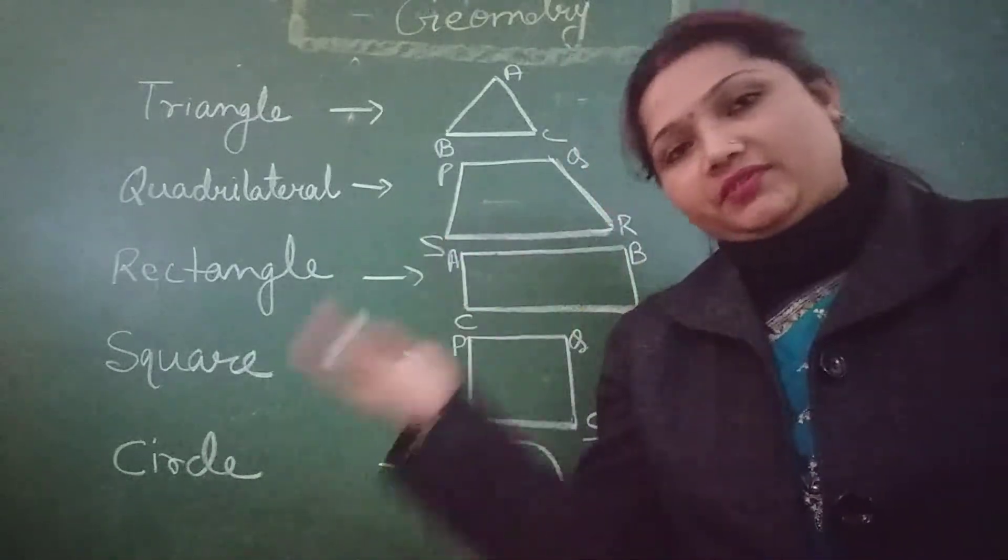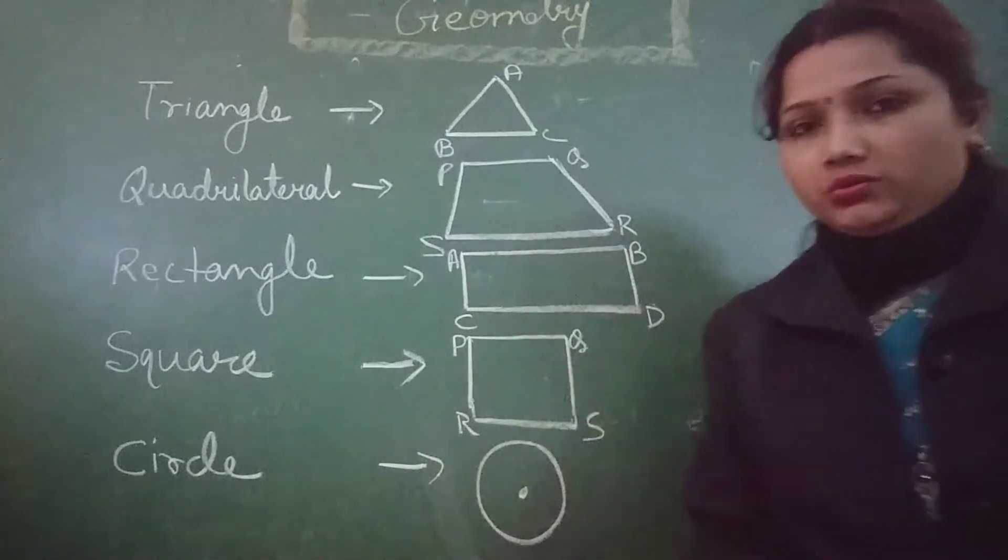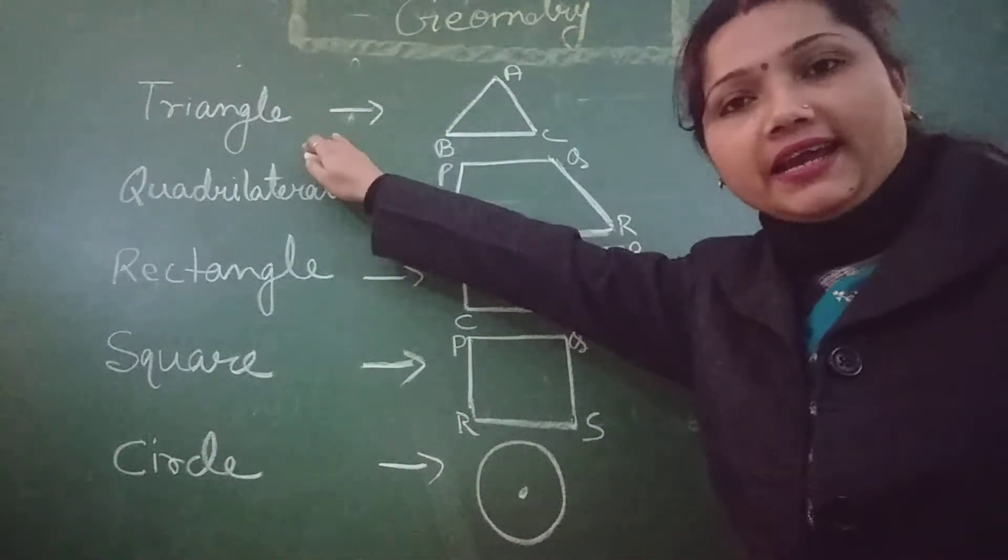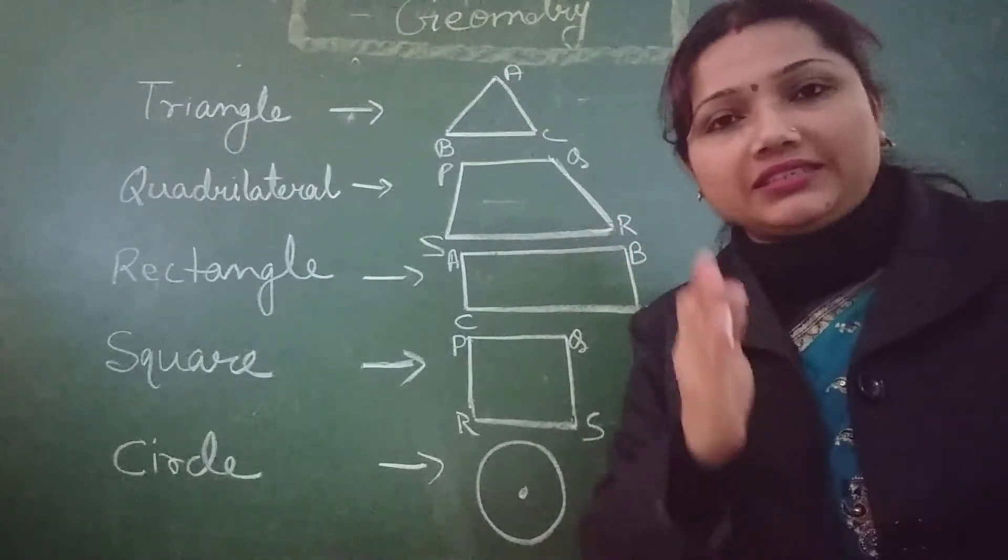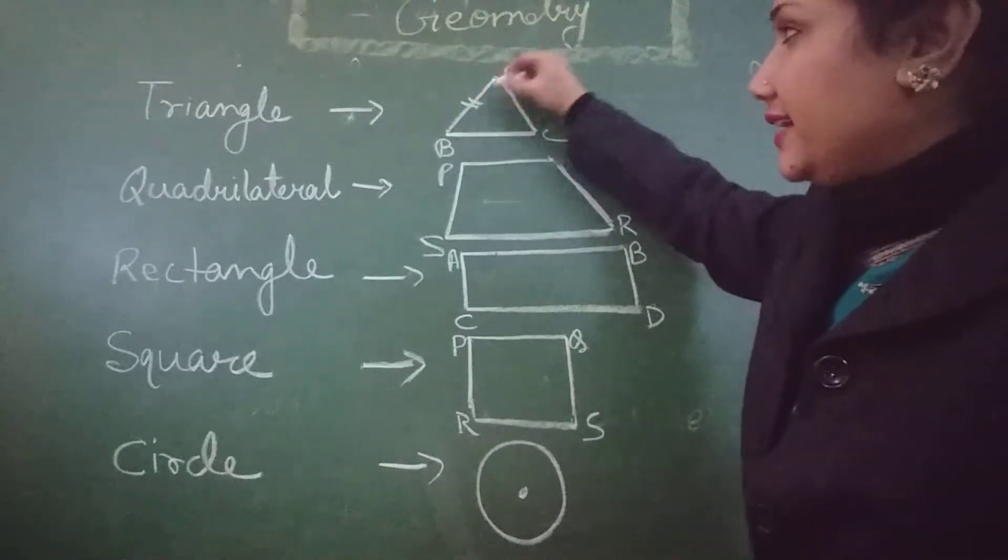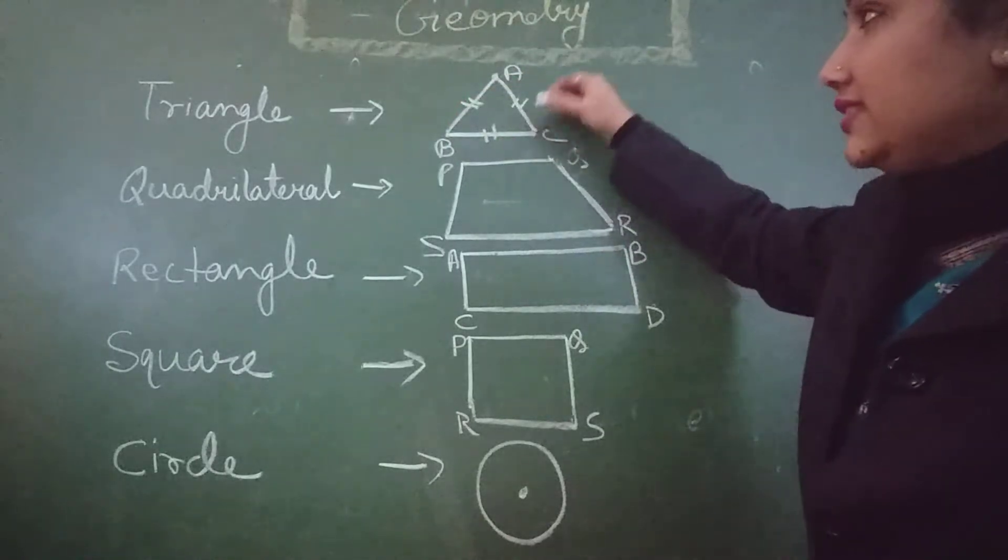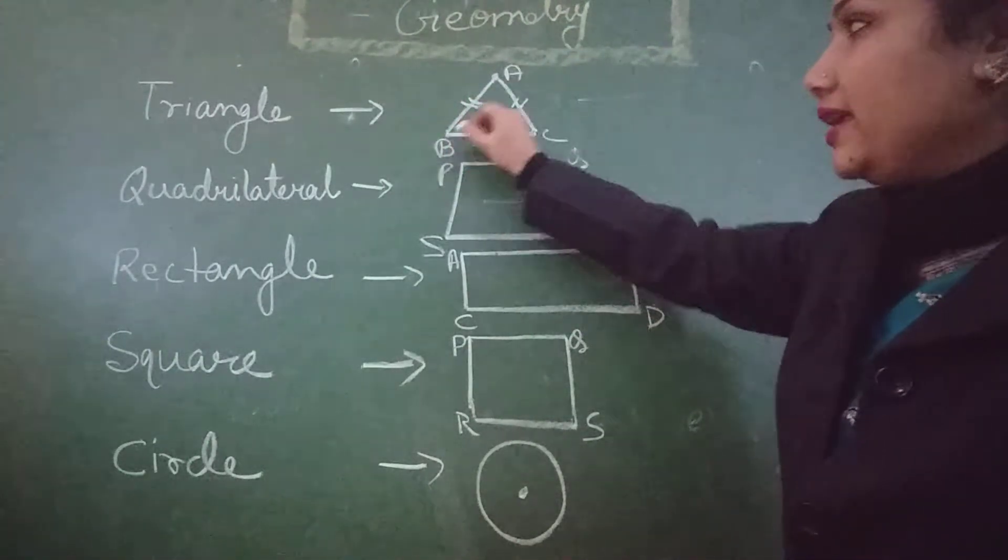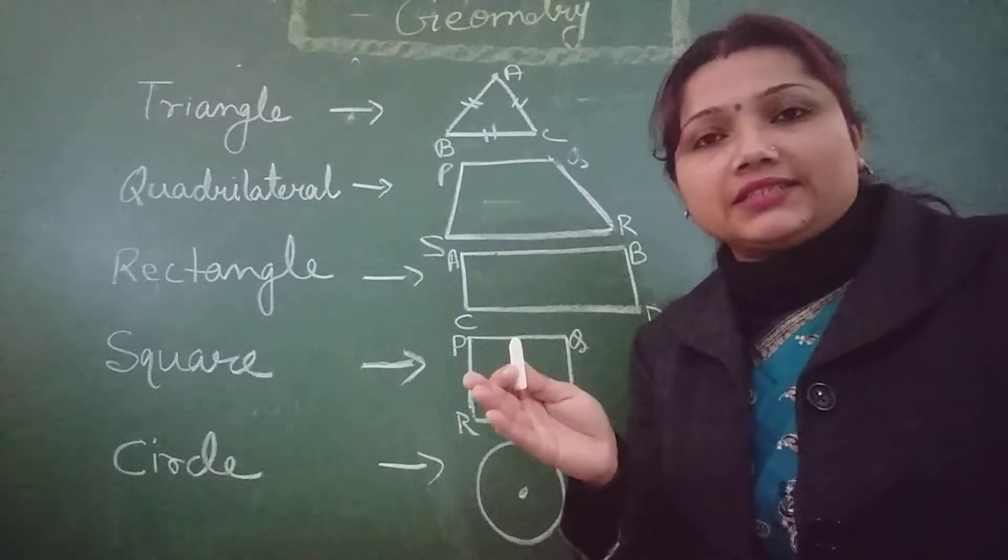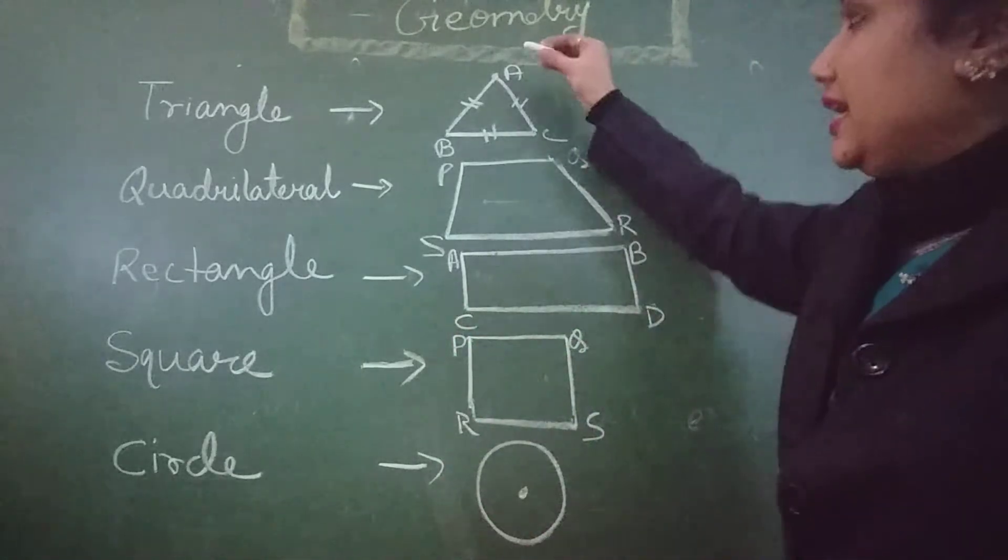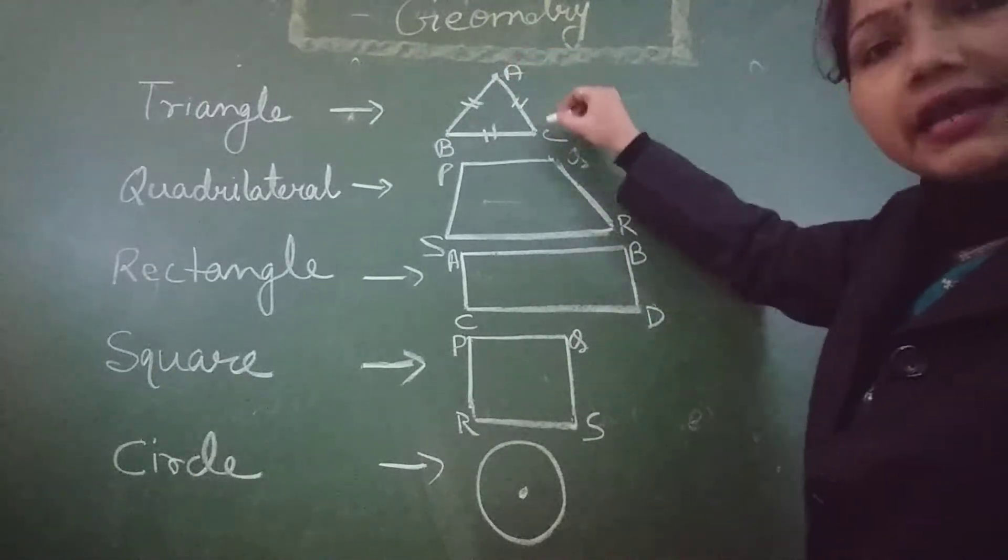Now, revise some different shapes. These are the plain figures. Plain figures are the two dimensional shape. The first one is triangle. A figure bounded by three line segments. It is called triangle. Triangle has three sides and three corners. The corners are A, B and C. Corners also known as the vertices. And the sides are AB, BC and AC.